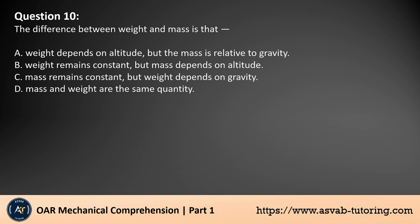Question 10. The difference between weight and mass is that: A. Weight depends on altitude, but mass is relative to gravity. B. Weight remains constant, but mass depends on altitude. C. Mass remains constant, but weight depends on gravity. D. Mass and weight are the same quantity. The answer is C.